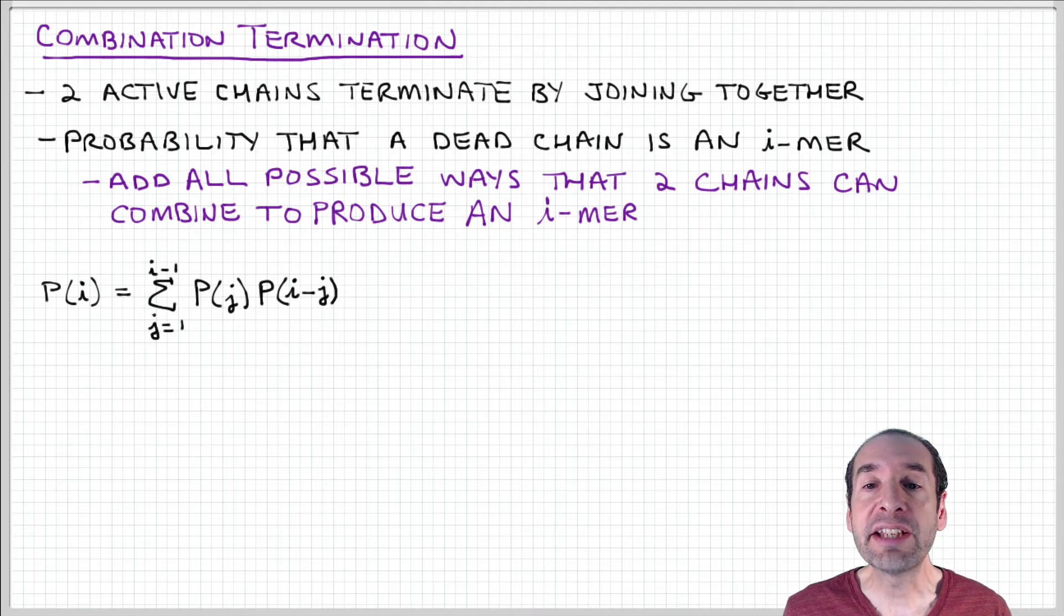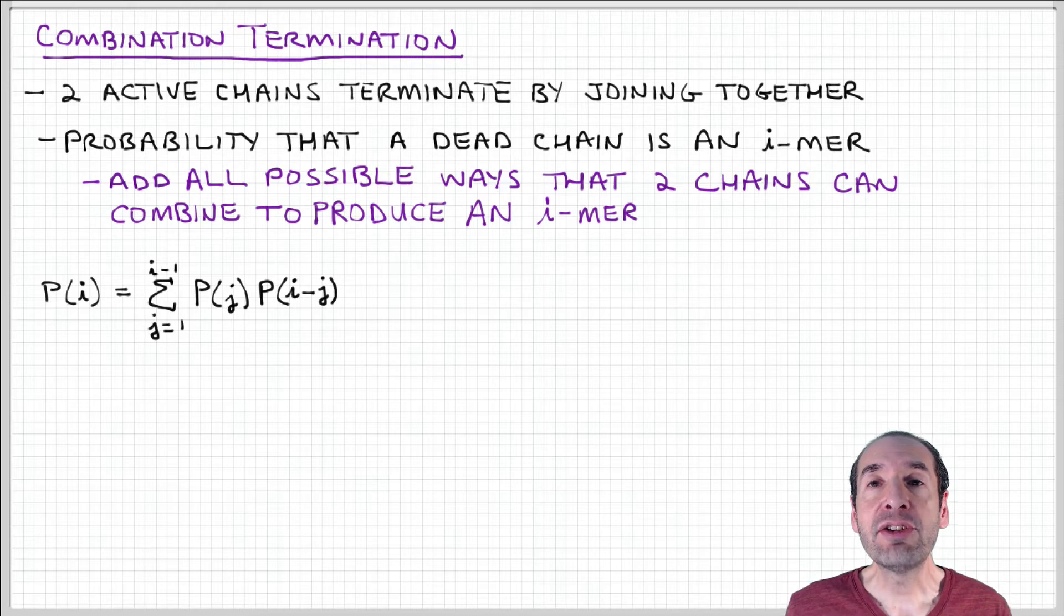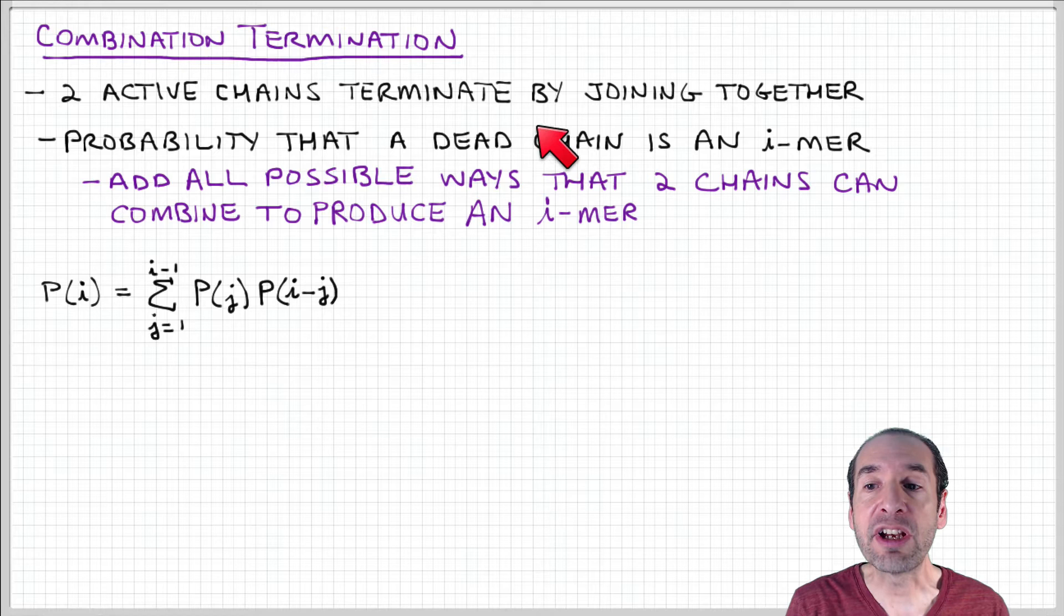Now let's take a look at combination termination. Remember that when chains terminate by combination, two active chains combine to form a dead chain whose length is the sum of the two active chains that experience combination.